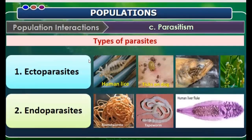There are two types of parasites: ectoparasites and endoparasites. Examples of ectoparasites are ticks on dogs. Examples of endoparasites are roundworm, tapeworm, and liver fluke.